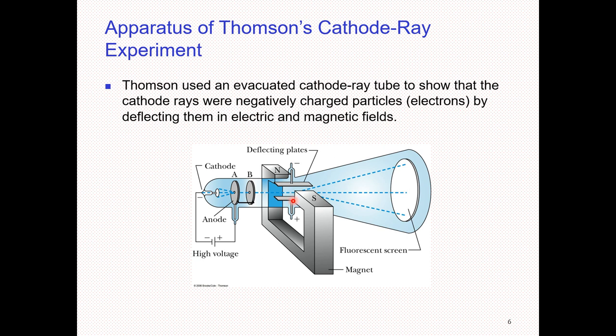Thomson observed that the cathode ray was deflected towards the positive plate and away from the negative plate. From this he deduced that the cathode ray carries a negative charge — it is a negatively charged particle.